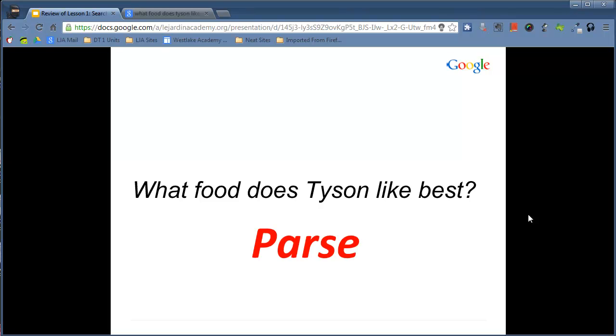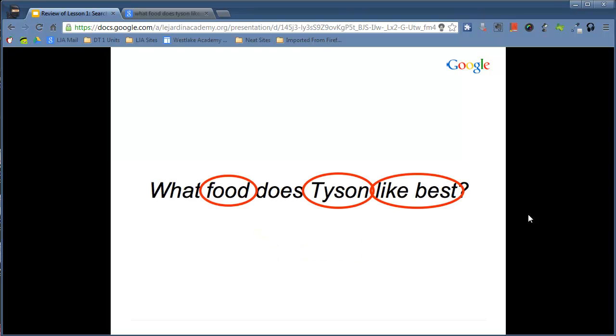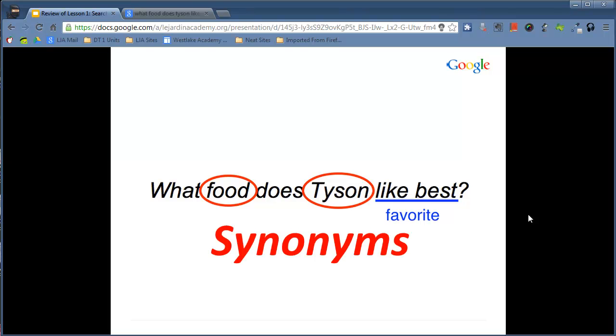The way we do that is by parsing our questions. To parse means to look at something, to change it, to modify it. There are four great steps to parse any question to make it a better targeted search. The first thing that we need to do is look for keywords. In this particular sentence, what food does Tyson like best? The keywords we're hoping to pull out are food, Tyson, and like best. Step two means that sometimes certain concepts or terms might actually be better replaced using synonyms. So instead of using the term or concept like best, we're going to use synonyms.